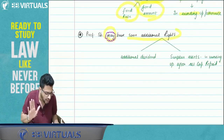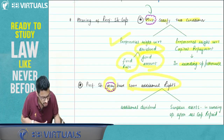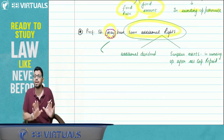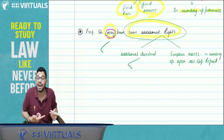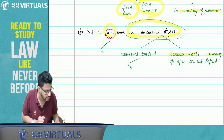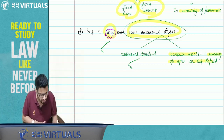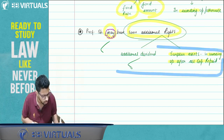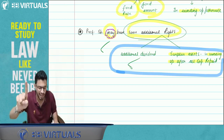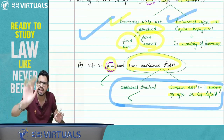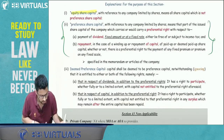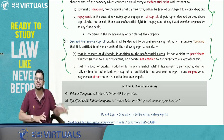Apart from that, preference capital may have additional rights. Notice in the notes — 'must have' and 'may have.' The two basic conditions above must be satisfied. The optional additional rights are: right to participate in some additional dividend (beyond the fixed amount), and the right to participate in surplus assets in case of winding up after all capital is repaid. Whether these optional rights exist or not, it doesn't matter — preferential capital remains preferential capital on the basis of the two mandatory conditions.